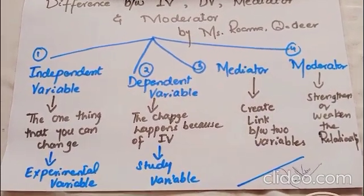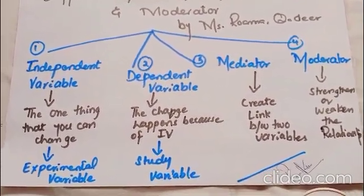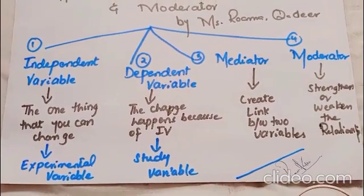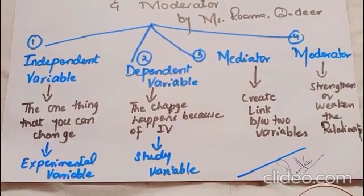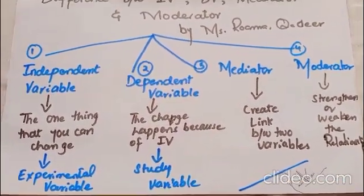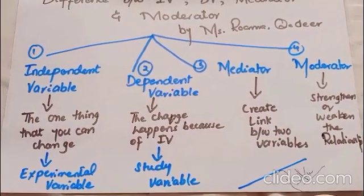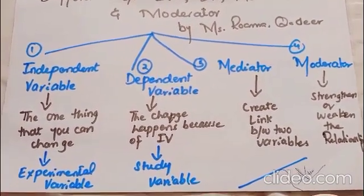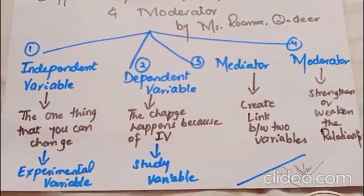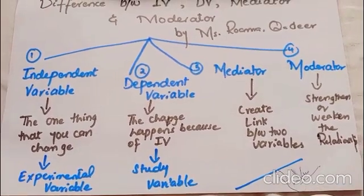The independent variable — you can change it, which is why it is also known as the experimental variable. If you change this, the whole scenario and the whole study is going to change.